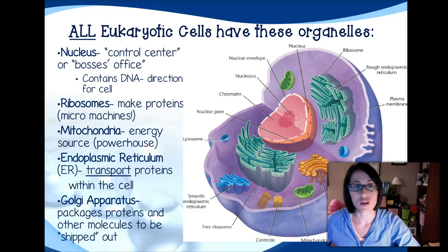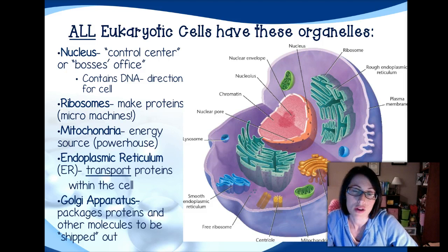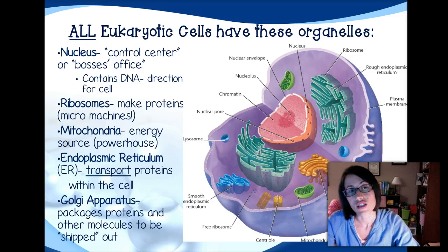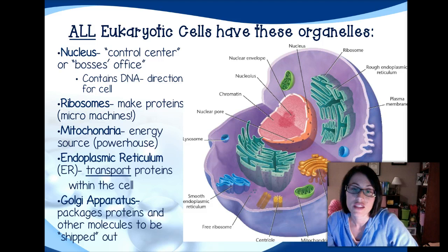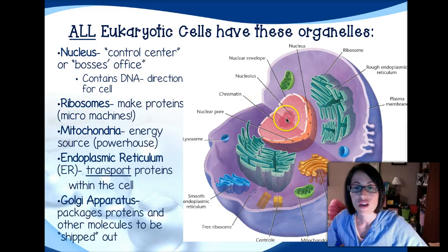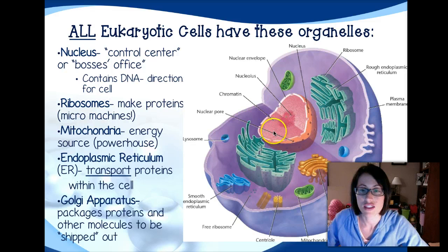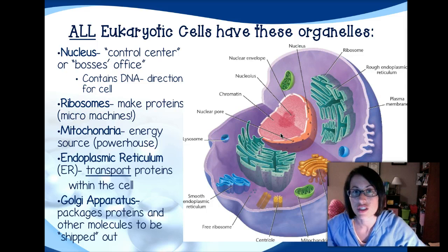So that was just a little review. All eukaryotic cells have these organelles that are listed. The very first one, and probably the most important because we're talking about eukaryotes, is the nucleus. The nucleus is what we would consider the control center or the boss's office. Inside of that holds what is called the chromatin, which is just a fancy word for uncoiled DNA. All of that dark pink fuzzy looking stuff in the middle is DNA, and the DNA holds the directions for everything the cell is going to do. The nucleus's main function is to protect that DNA, and the DNA is what's controlling what goes on inside the cell.